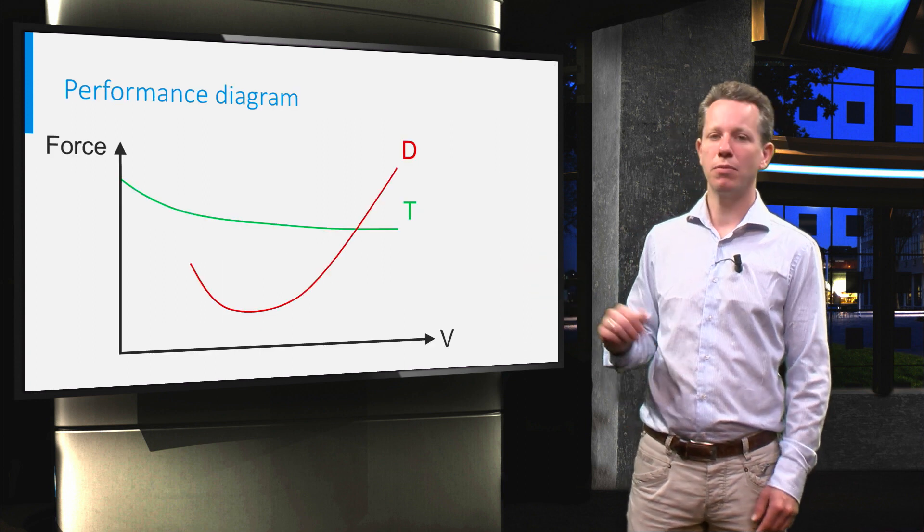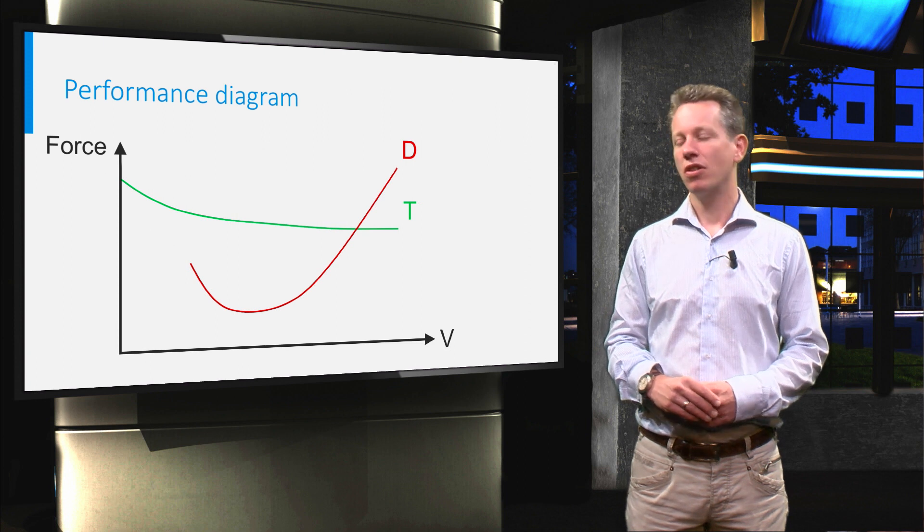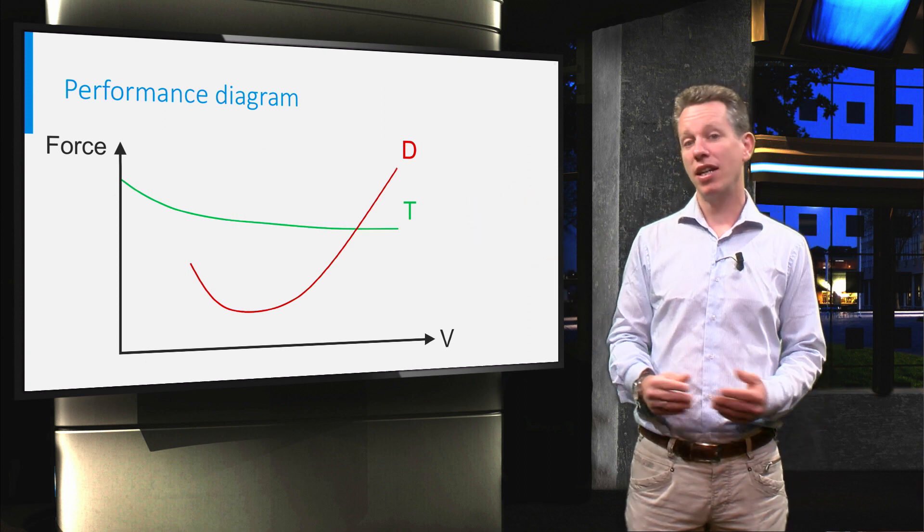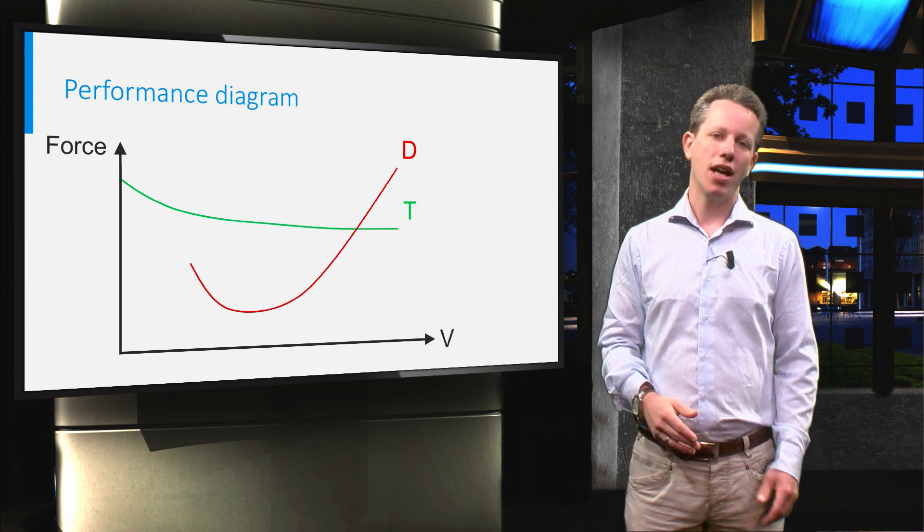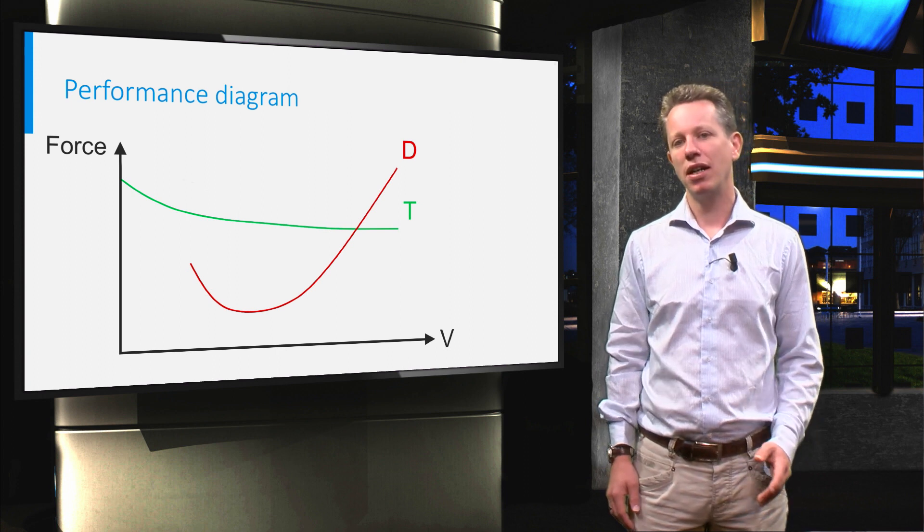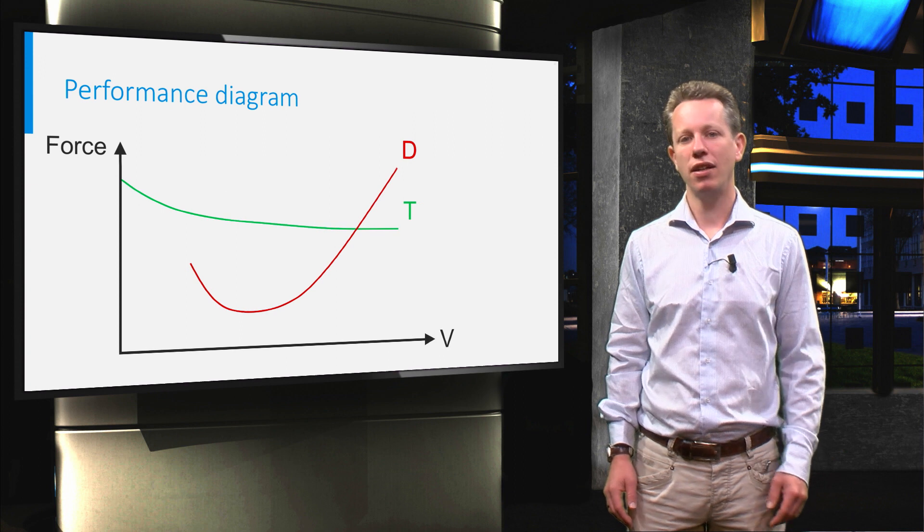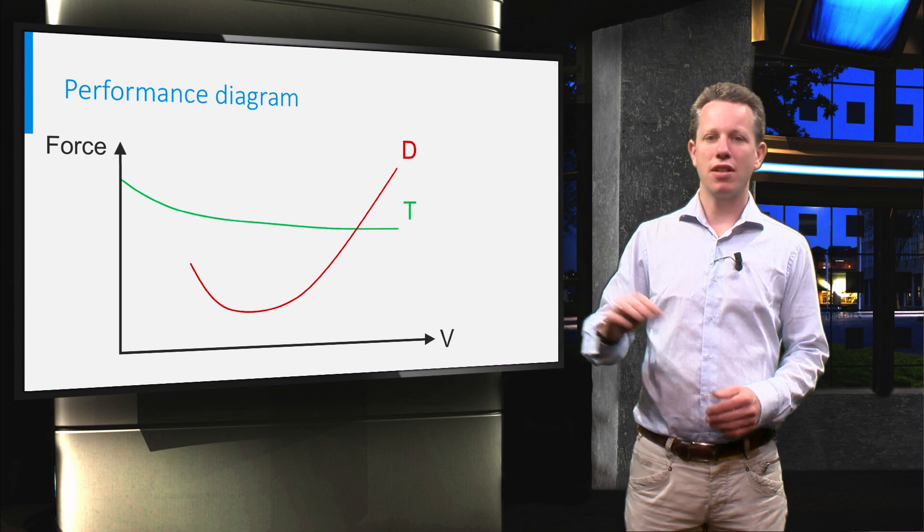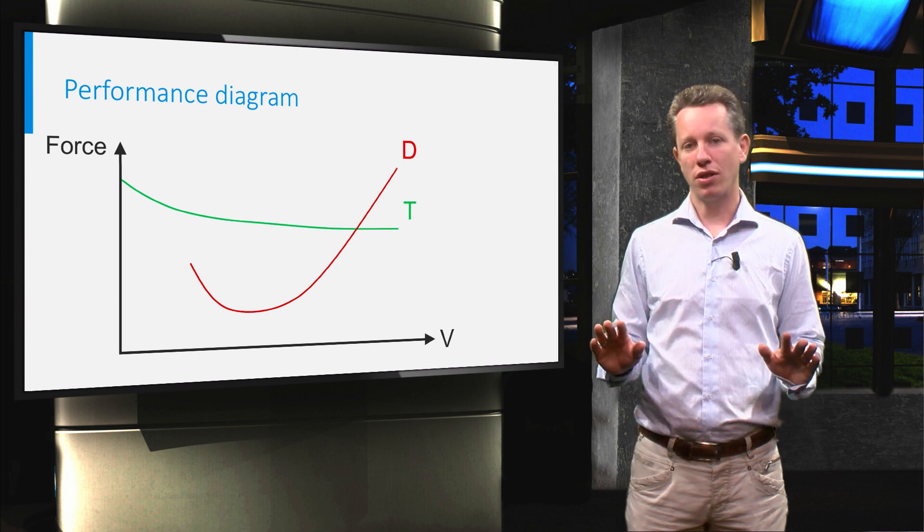For this the performance diagram can be used. It shows maximum thrust available and the aerodynamic drag in symmetric flight. However, in a turn the pilot will have to increase the angle of attack and thereby the lift and drag coefficient. So the basic performance diagram is not valid for turning flight.